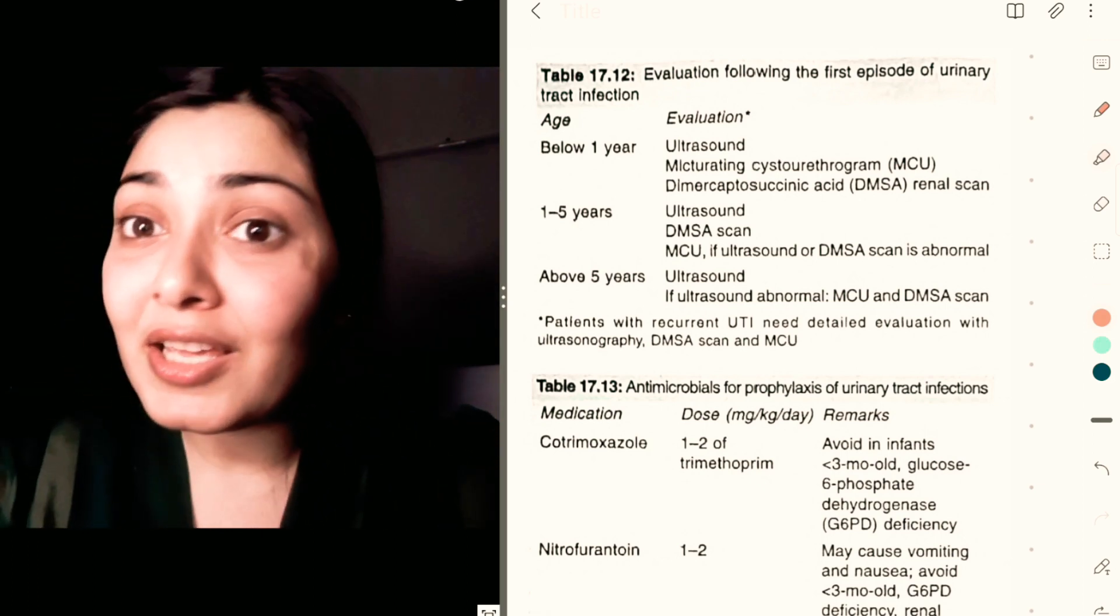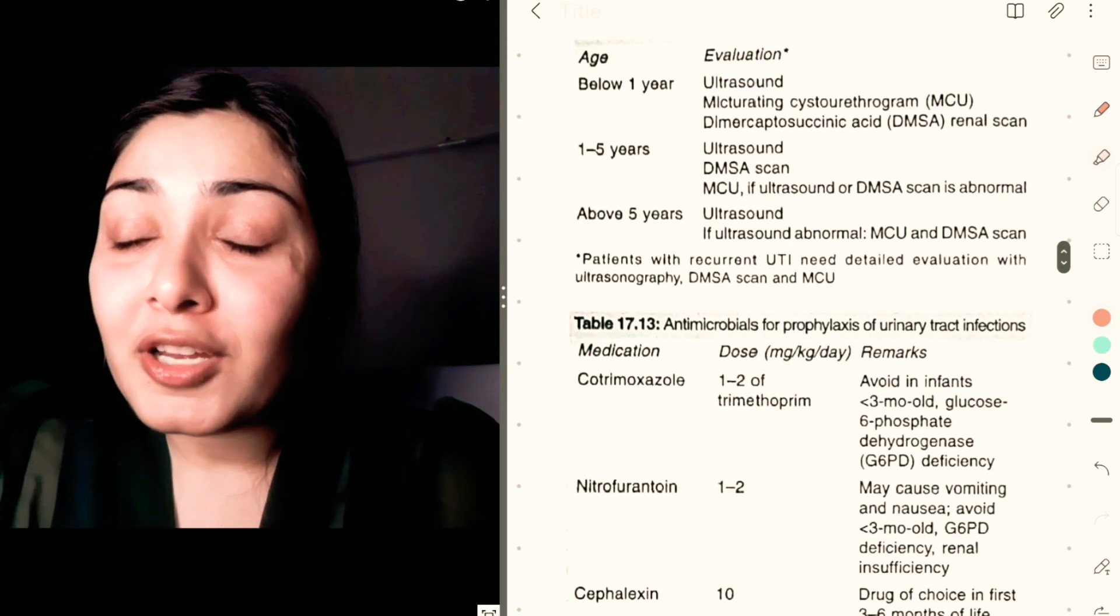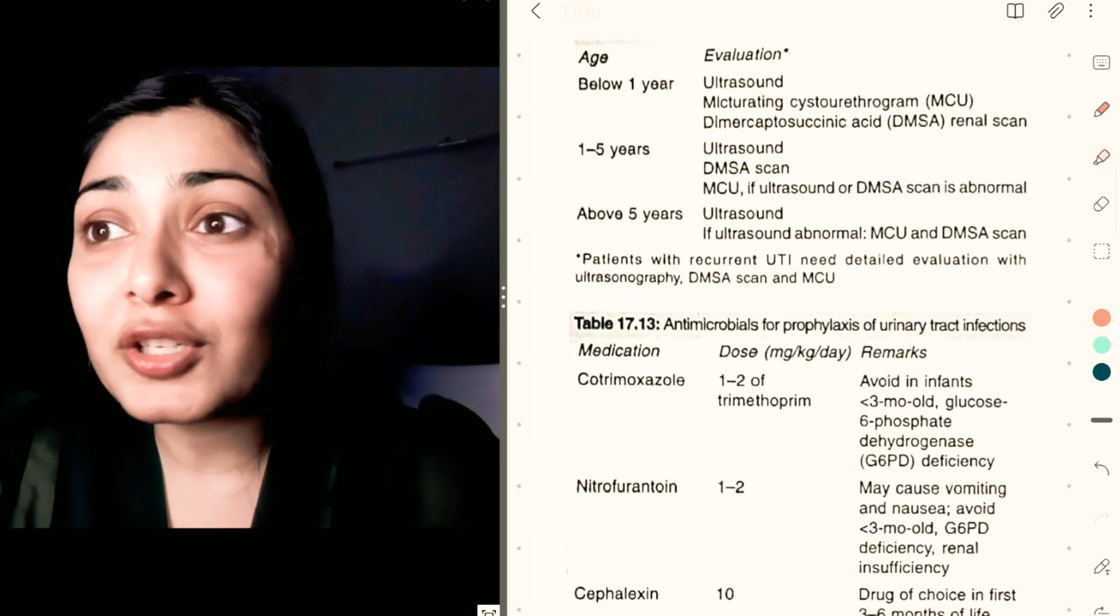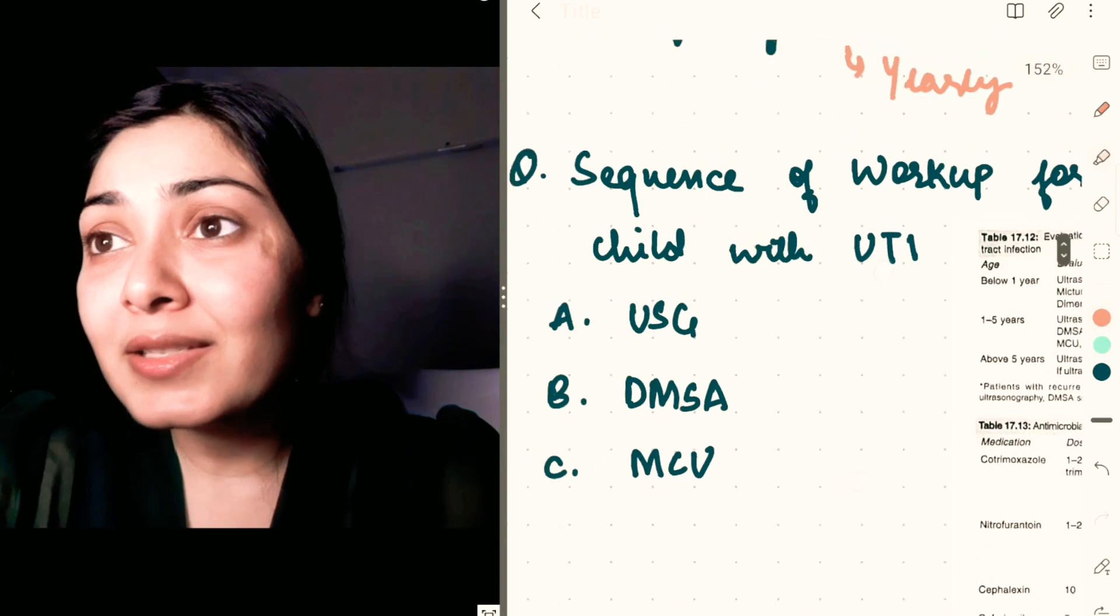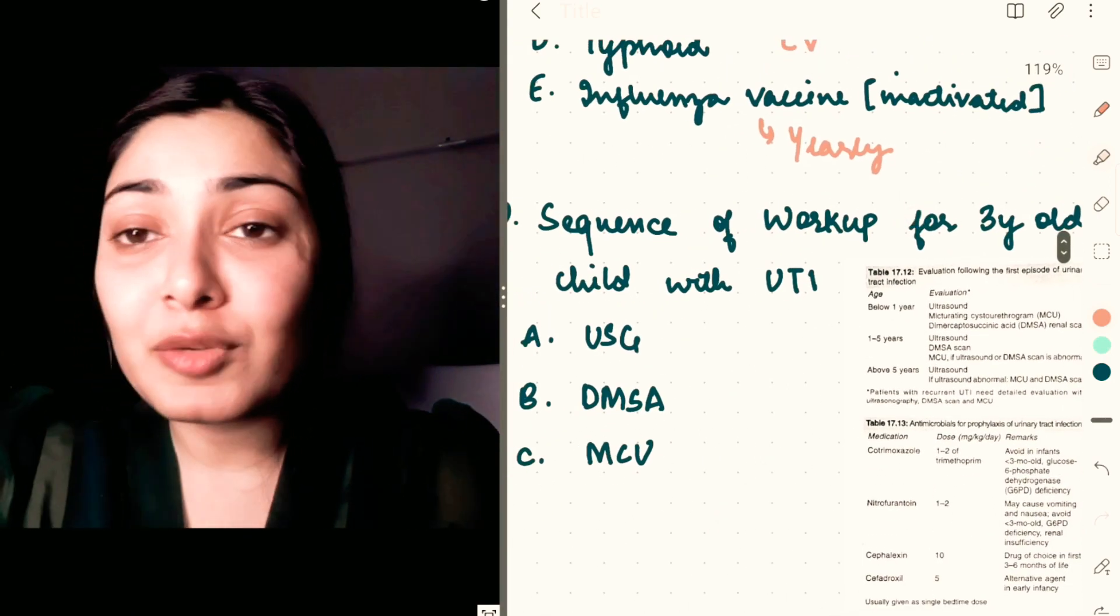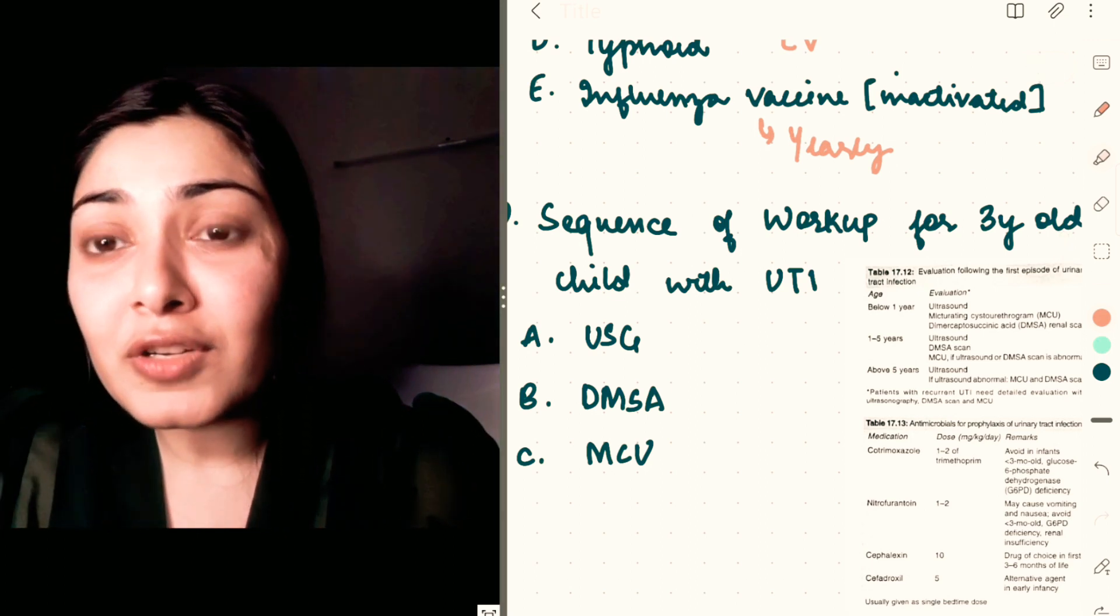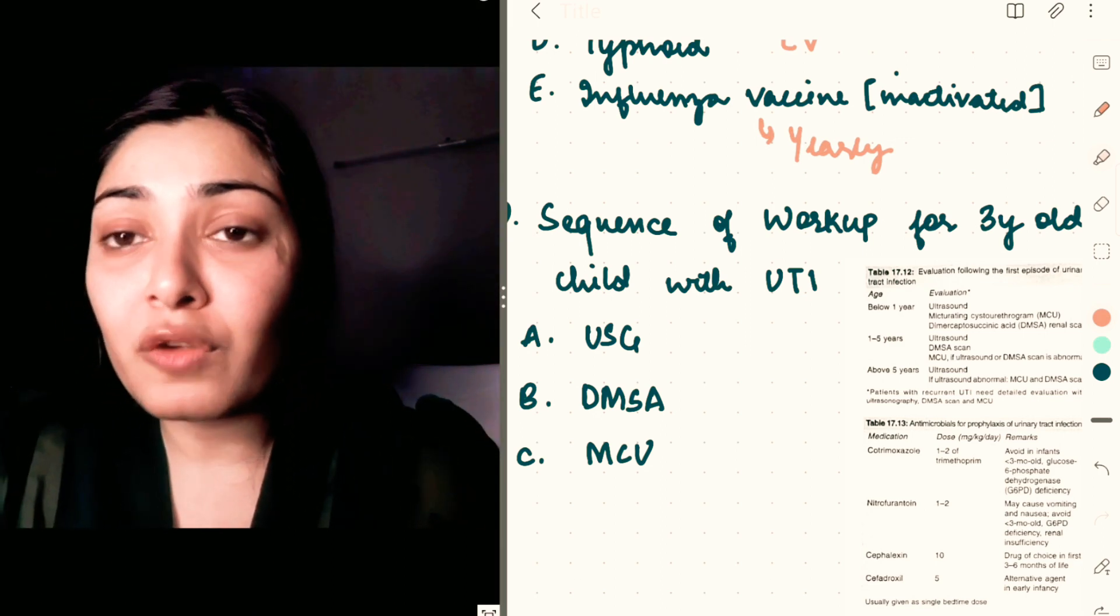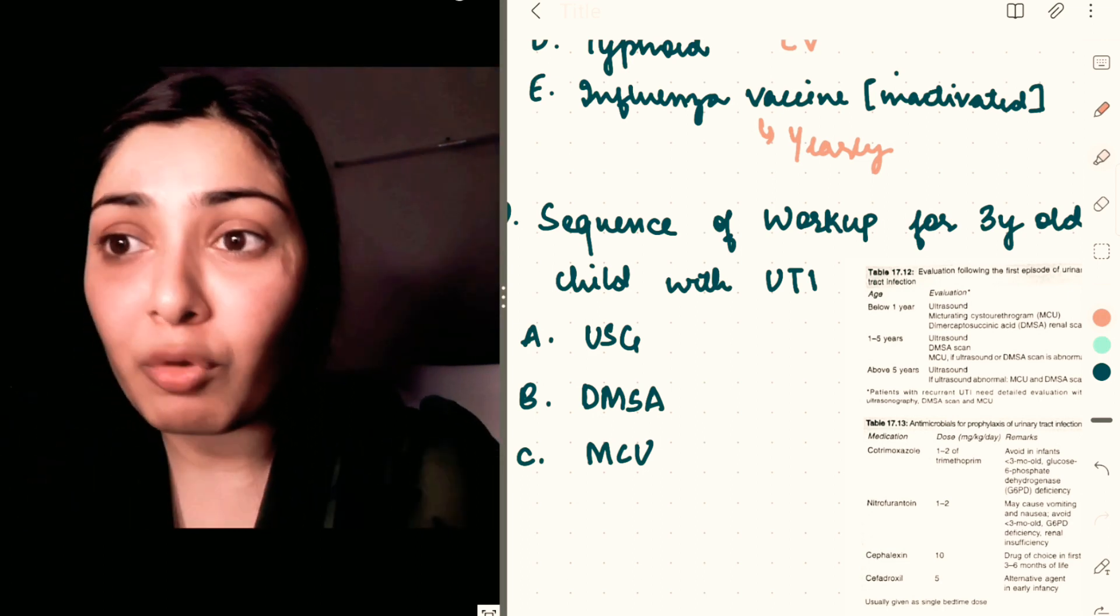Above 5 years of age, you go for ultrasound. If something is abnormal in that ultrasound, then you go for DMSA and MCU. Here in the question, you were asked the sequence of workup for a 3-year-old child. We have seen in this table that for 1 to 5 years, you go for ultrasound and DMSA, and if something is wrong, then you go for MCU. So if a combination of options are given, you go for ultrasound and DMSA as number one, and the second one would be MCU.